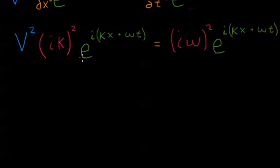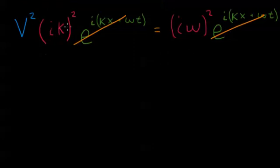But so now that we have this function, we've taken the derivatives, so now we can just divide both sides by this function. This is the same function in green here. So we can divide both sides by it and it goes away. And then if we square i, we get negative 1, right, because that's the definition of i. i squared is negative 1.